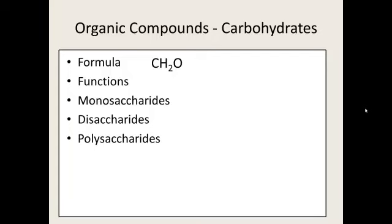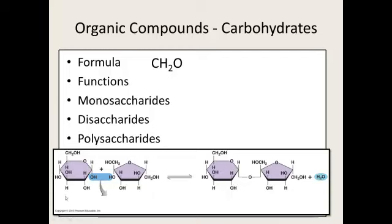Carbohydrates can hook together to form huge macromolecules. A monosaccharide — like glucose and fructose — are both six-carbon molecules with the same molecular formula C₆H₁₂O₆, but they look a little different in structure. Saccharide comes from the Greek for sugar or sweet. We can hook two of them together to make a disaccharide.